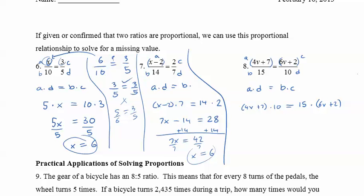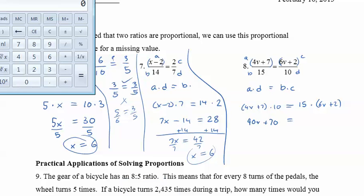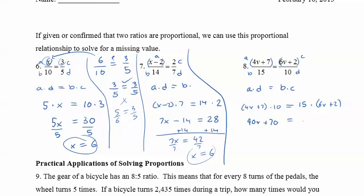All right. So really, here's your solving equation with the variables on both sides. So in this one, distribute the 10 to both of them. So 40v plus 70 equals 15 times 6. I admit, I do not know right now what 15 times 6 is. We can use a calculator, but it's 90. There we go. So 90v plus 30. And now you just solve the equation.